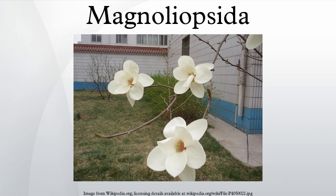The Reveal system used the name Magnoliopsida for a group of the primitive Dicotyledons, corresponding to about half of the plants in the Magnoliids. Class 1, Magnoliopsida: superorder 1, Magnolianae; superorder 2, Lauranae.